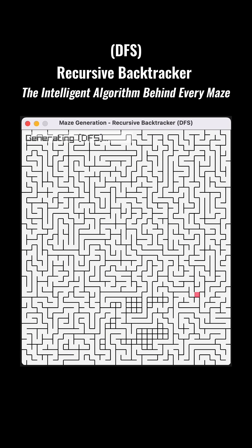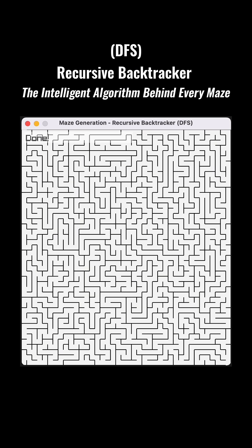If the current cell has no unvisited neighbors, that cell is popped from the stack — this is the backtracking step. This process repeats until the stack becomes empty, signaling that the maze generation is complete.